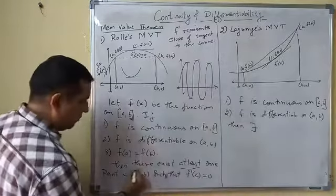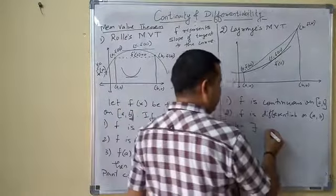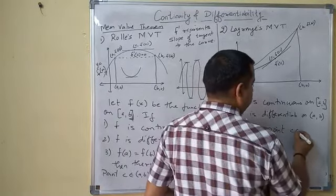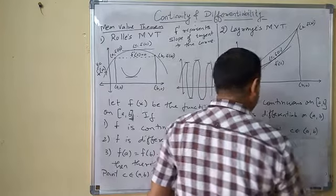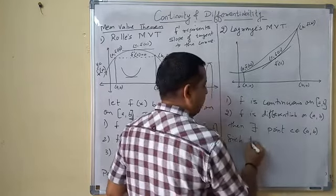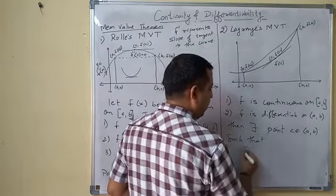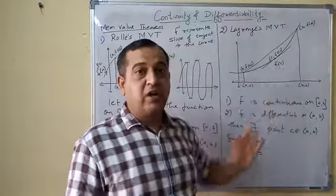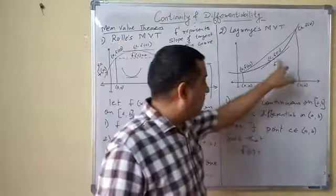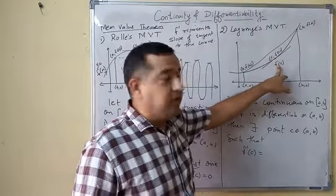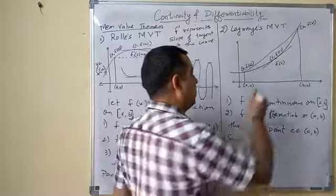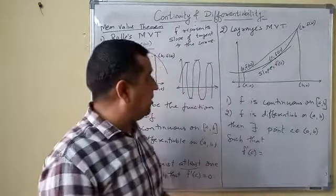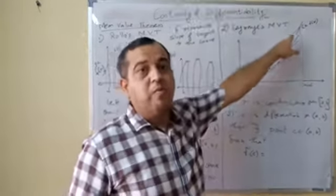Then there exists point c belonging to open interval (a,b) such that f'(c) is the slope of the tangent. This tangent is drawn at this point. f'(c) is slope. But this tangent is parallel to the line segment connecting (a, f(a)) and (b, f(b)).